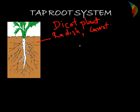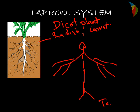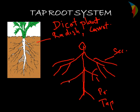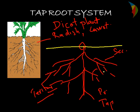The seed contains a radicle part, which continues to grow straight downward. From there, we have secondary roots coming out. We have one tap root as the primary root, and then the secondary root system with so many roots coming out — secondary and tertiary root systems branch off from there.